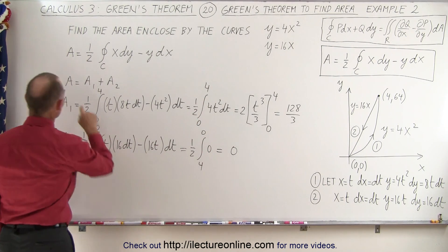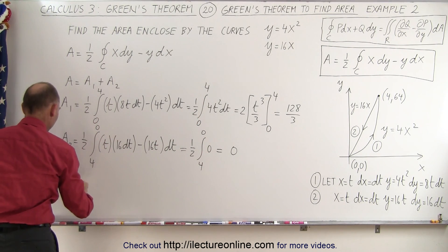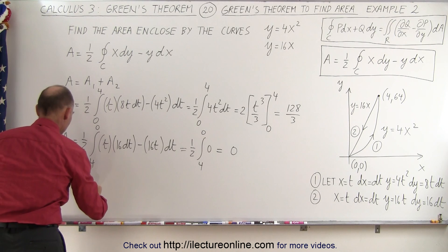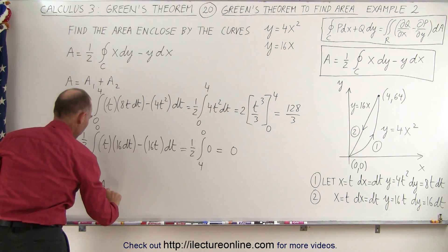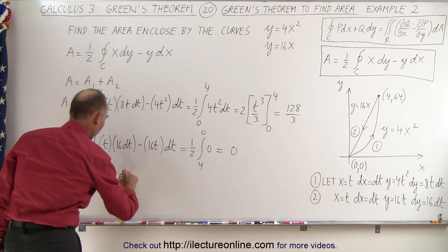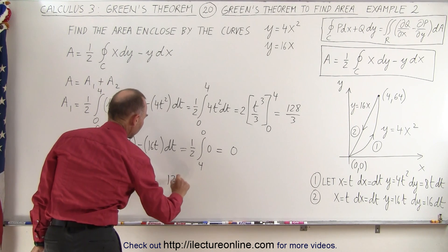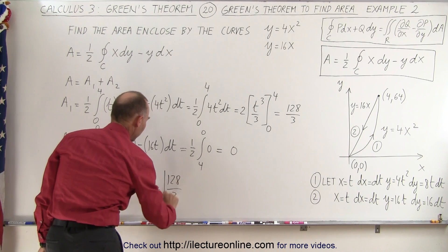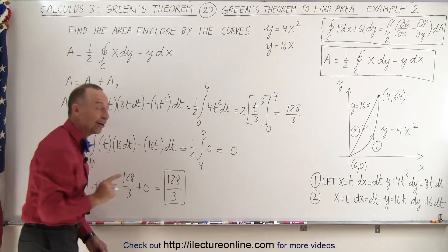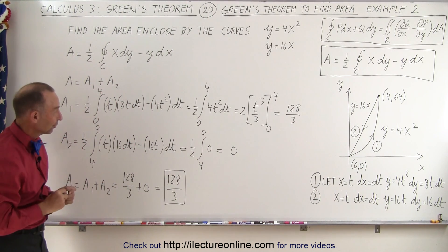And now to find the total area, we simply have to add the results of the two, a1 plus a2, which is equal to 128 divided by three plus zero, which is 128 divided by three, which is indeed the area between those two curves.